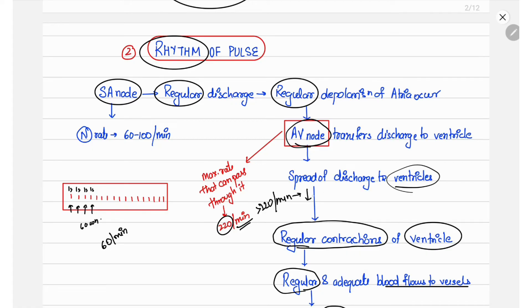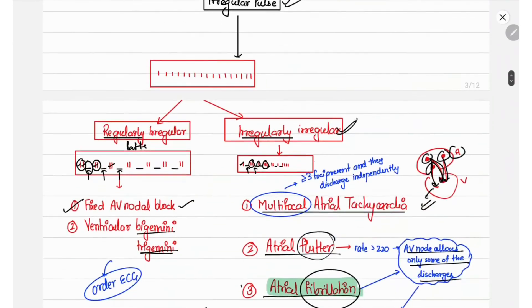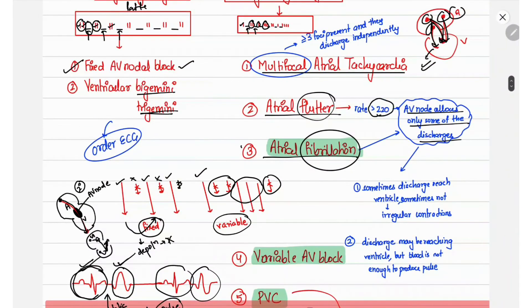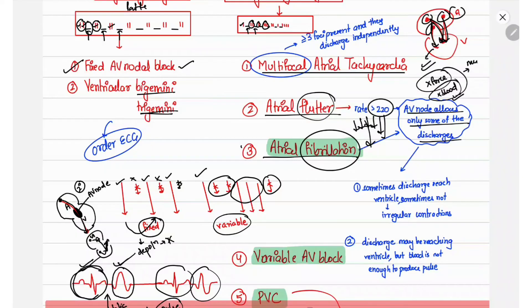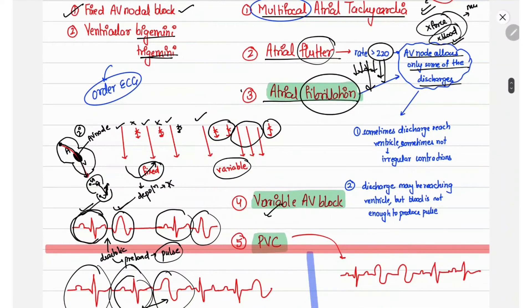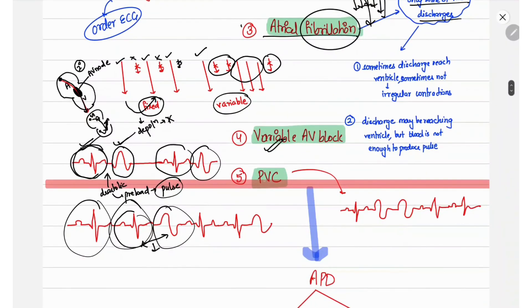If the impulses passing through the AV node exceed 220 per minute, some will not be transferred, leading to missed beats. In atrial flutter and fibrillation, the rate exceeds 220, so the AV node cannot allow all discharges to reach the ventricle. Additionally, as multiple impulses are passed to the ventricle, diastolic time is very short and blood volume in the ventricle is very low. The combination of insufficient electrical depolarization and insufficient preload leads to missed beats and an irregular pulse.